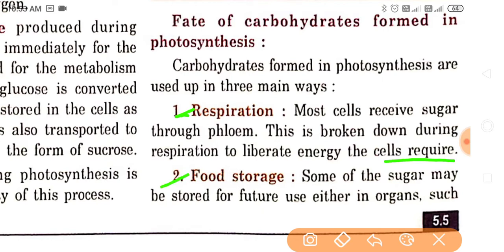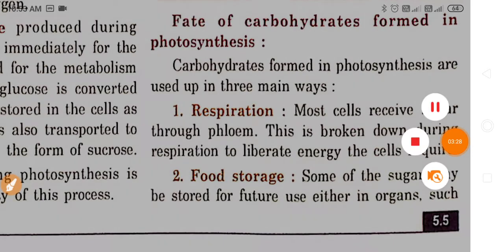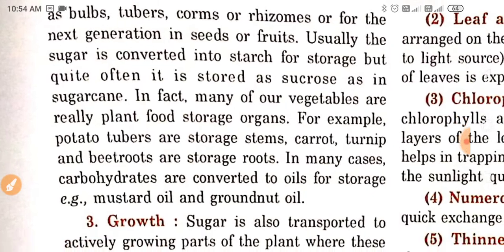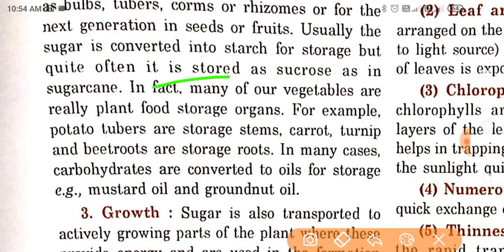Second is food storage. Some of the sugar may be stored for future use, either in organs such as bulbs, tubers, corms, or rhizomes, or for the next generation in seeds or fruit. Usually the sugar is converted into starch for storage, but quite often it is stored as sucrose, as in sugarcane. Many of our vegetables are actually plant food storage organs — for example, potato tubers are storage stems, and carrot, turnip, and beetroot are storage roots. In many cases carbohydrates are converted to oils for storage, such as mustard oil or groundnut oil.